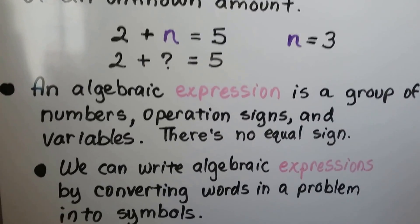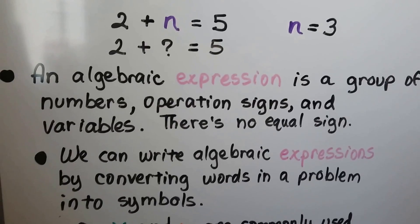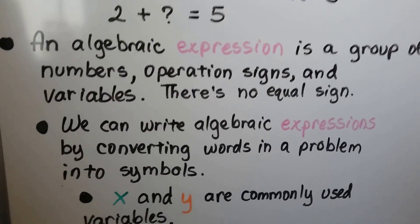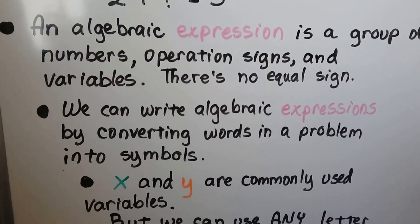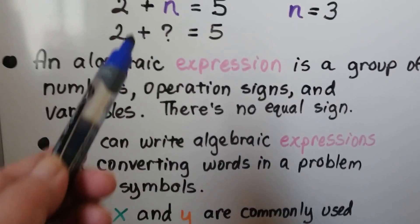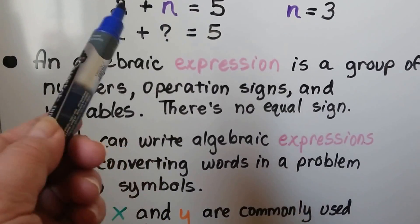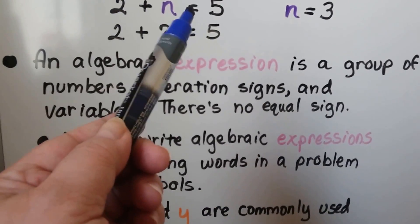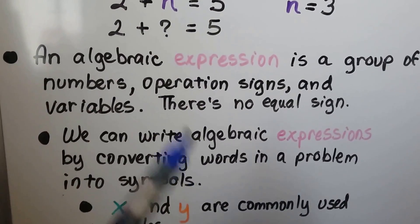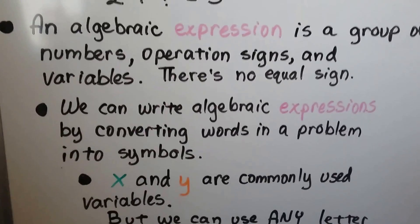An algebraic expression is a group of numbers, operation signs, and variables. There's no equal sign. So 2 plus n equals 5 is an algebraic equation because there's an equal sign. An expression doesn't have an equal sign.